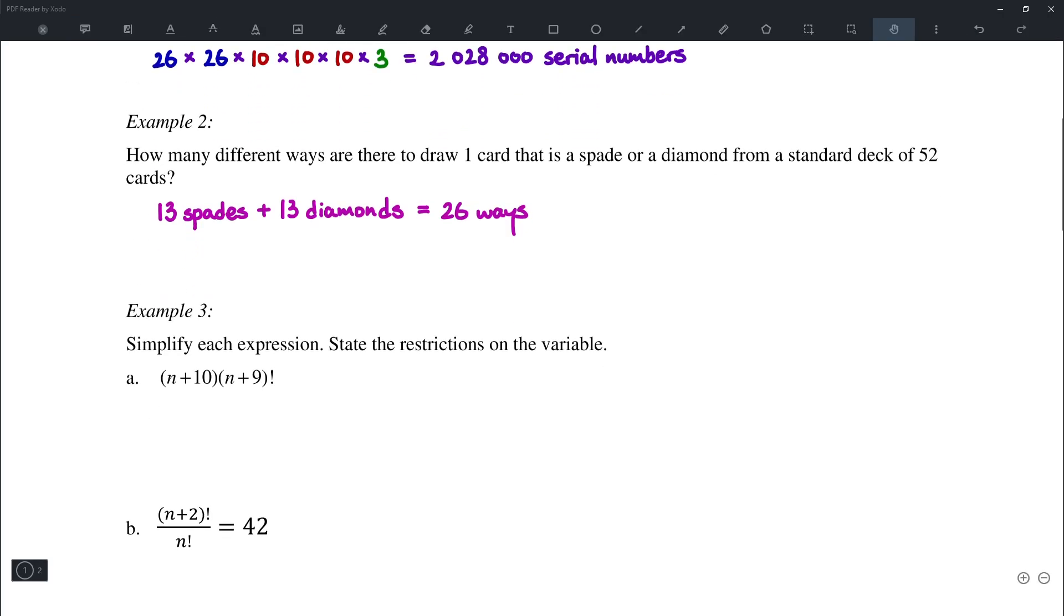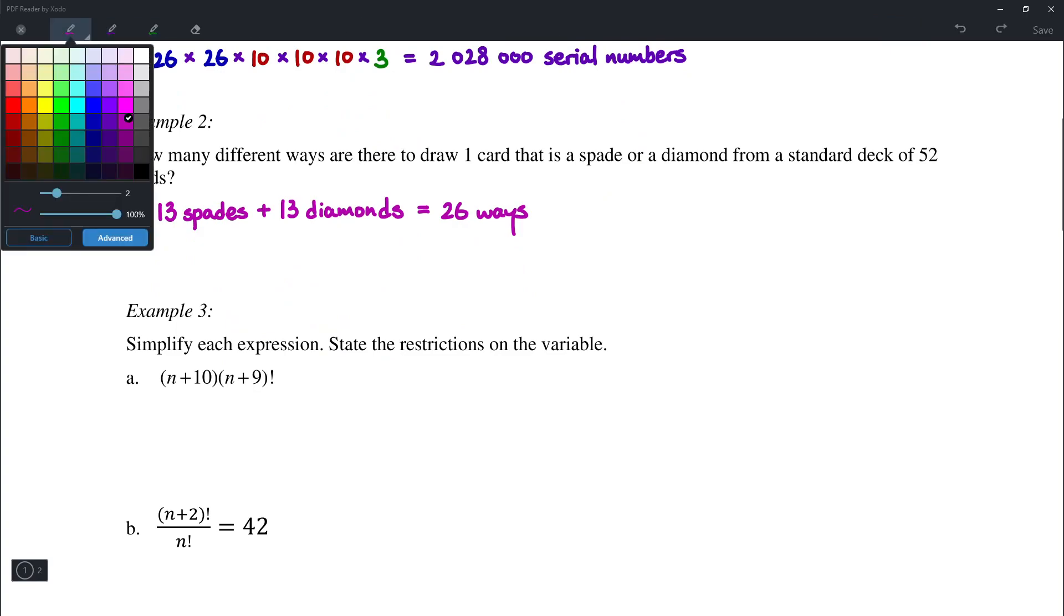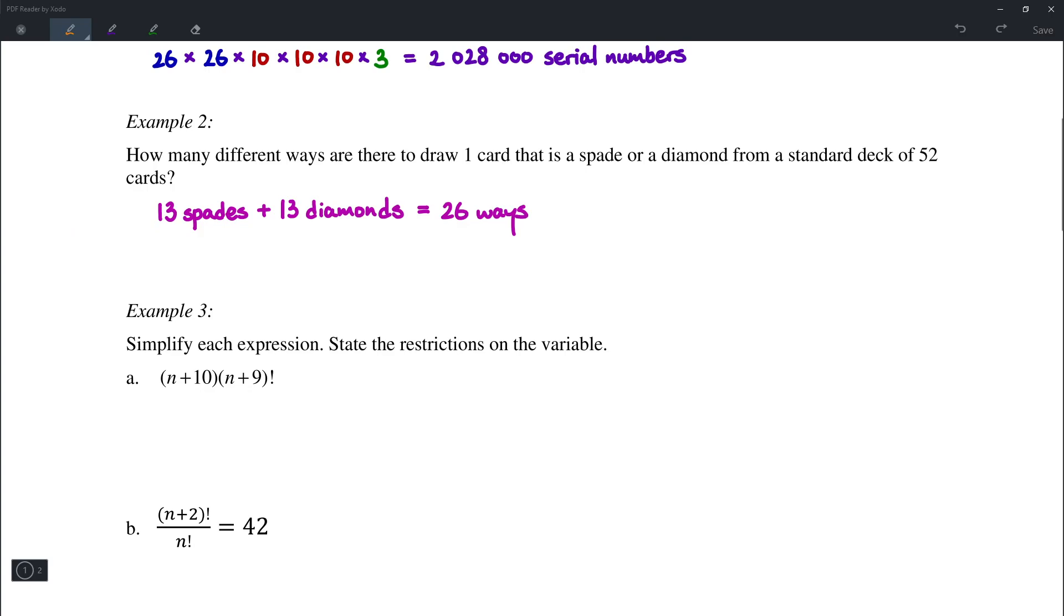Let's move on to example number 3. So here we are using the factorial notation. First question we have is to simplify this expression. Notice that n plus 10 is 1 greater than n plus 9. So this simplifies to just n plus 10 factorial.